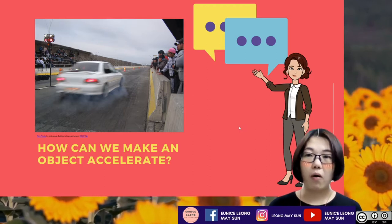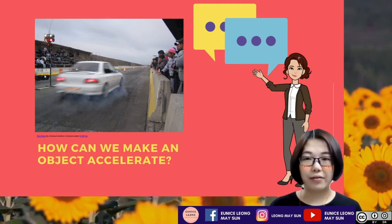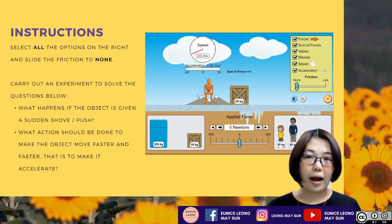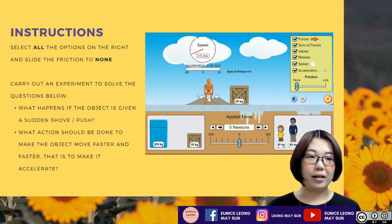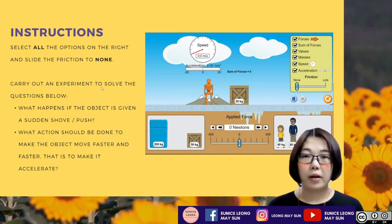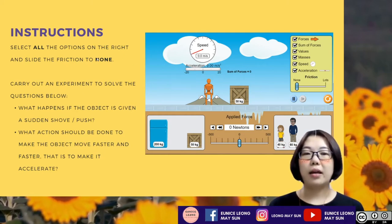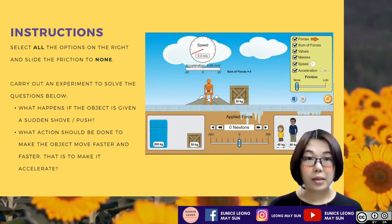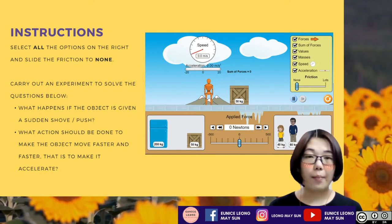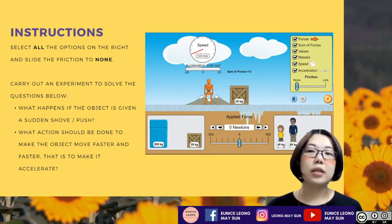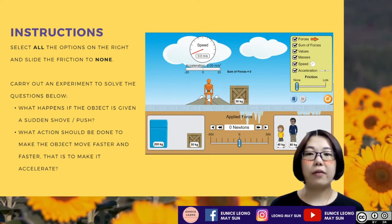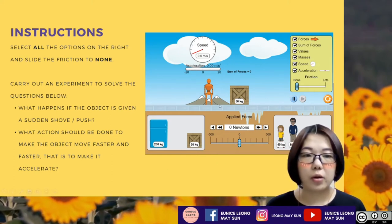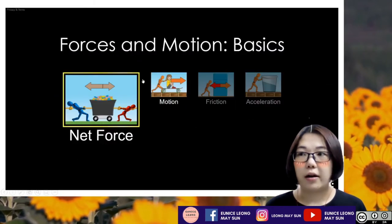We're going to be focusing more on how to accelerate an object first. In order to do that, we're going to be playing with a simulation today. In this particular simulation, I'm using the PhET simulation of basic motion under the tab of acceleration. We're going to select all the options on the right side, and instead of explaining, I'm going to go into the simulation right now.